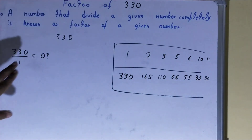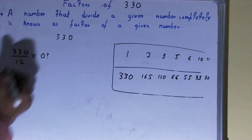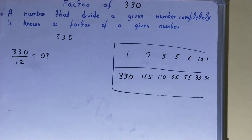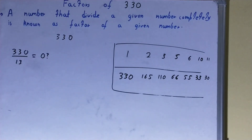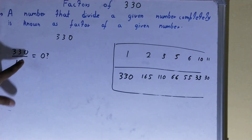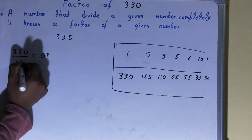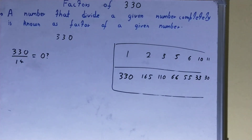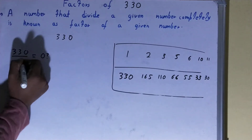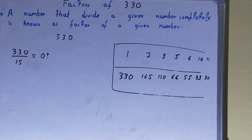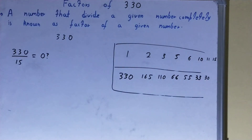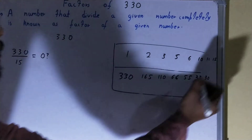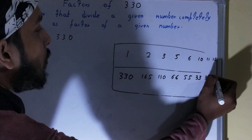After 11, we will check with 12 — not possible. 13 — not possible. 14 — not possible. 15 — yes, it is possible. So 15 is also a factor. The space is not there but I will repeat all the factors, don't worry. 15 into what times? 15 into 22 times.